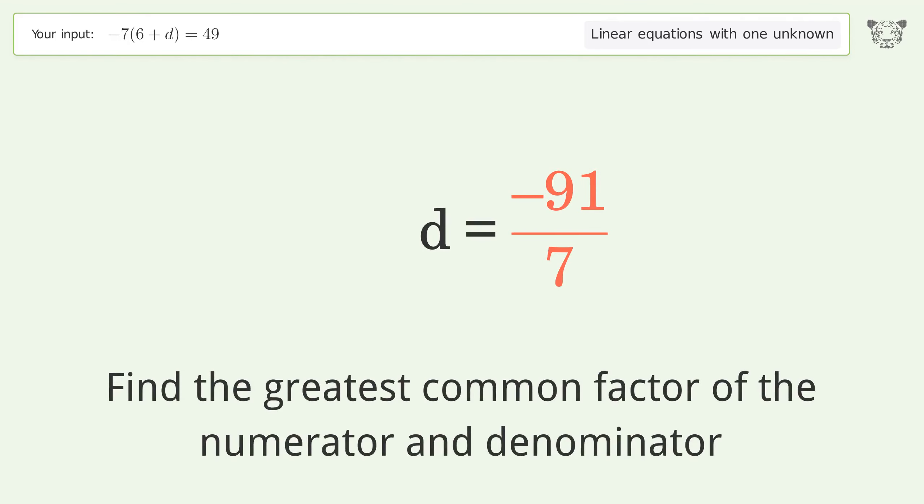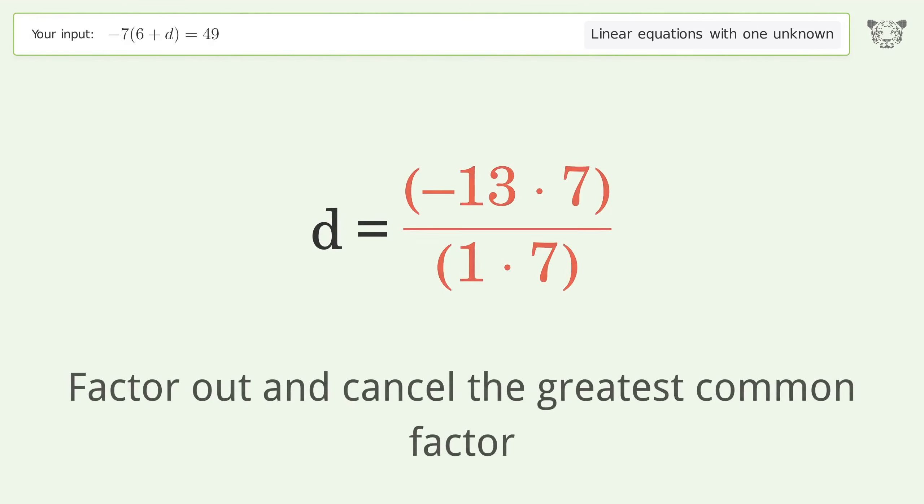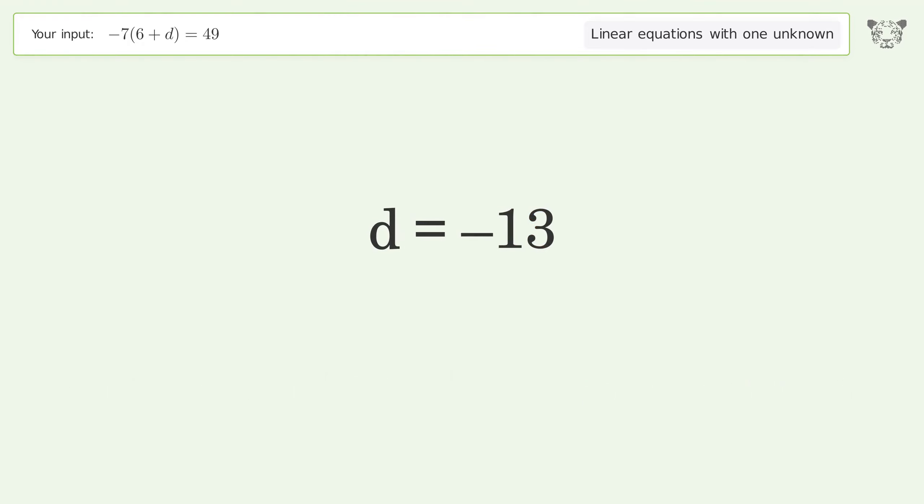Find the greatest common factor of the numerator and denominator. Factor out and cancel the greatest common factor. And so the final result is d equals negative 13.